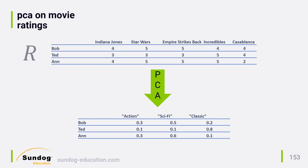Now take a look at the columns in this new matrix. Each column is a description of users that make up that feature. For example, action can be described as 30% of Bob plus 10% of Ted plus 30% of Ann. We'll call this matrix U. Its columns describe typical users for each latent feature we produced.